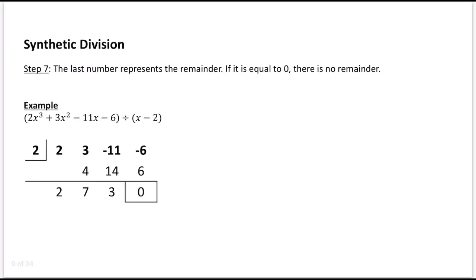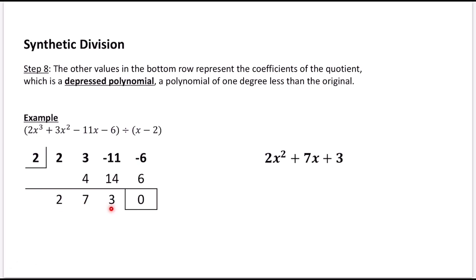Now we interpret the values. The last number represents the remainder — in this case 0, meaning there's no remainder. All other values represent the coefficients of the quotient, which is called a depressed polynomial because it has a degree one less than the original. Since the original polynomial was cubic, the answer will be quadratic, starting with x squared. So x squared gets the first coefficient, then the x term gets the second, and the last value, 3, is the constant term.